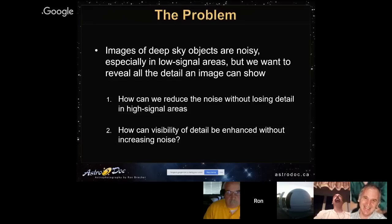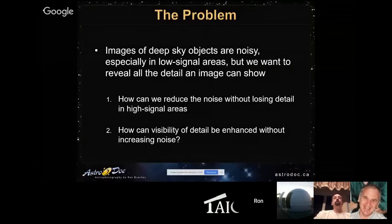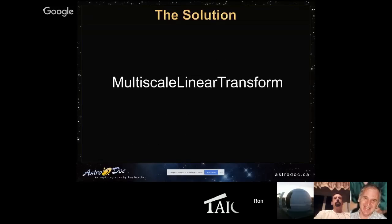So here's what the problem is. The sky is dark at night, and that means images of deep sky objects are inherently noisy, especially in low signal areas — the background and dim regions of a nebula. There are really two problems: how do we reduce the noise without losing detail where there's good signal, and conversely, where there is good signal, how can we enhance the detail without increasing the noise? The answer is multiscale linear transform. It can do both of those things, and it does it very well.